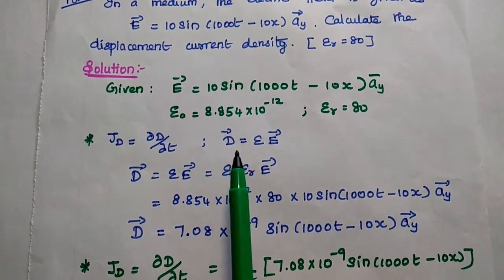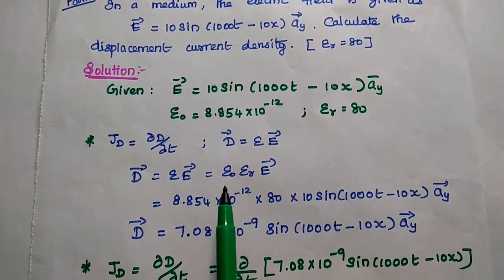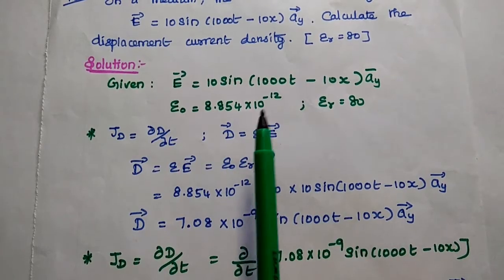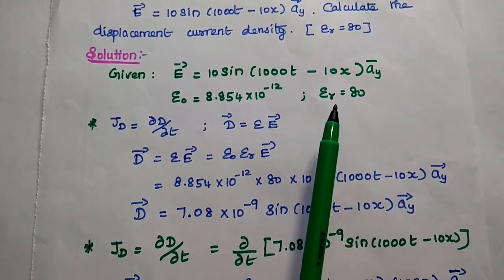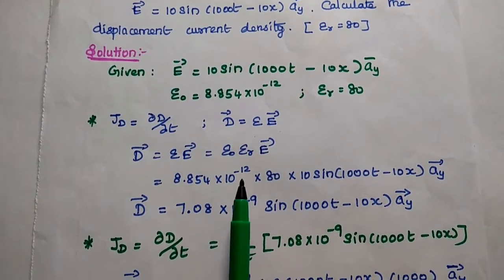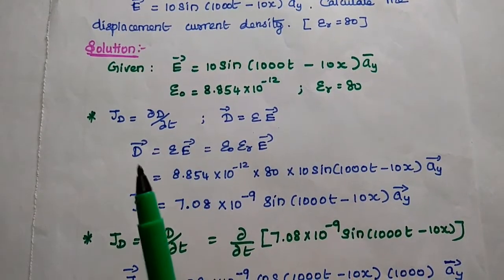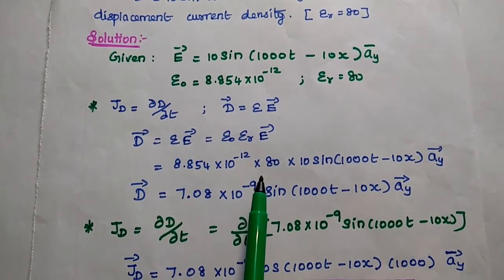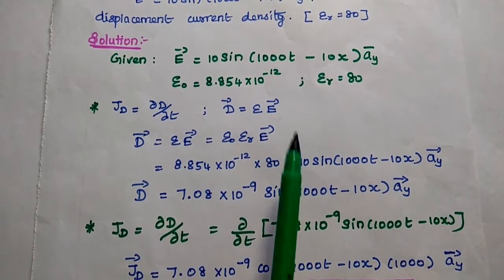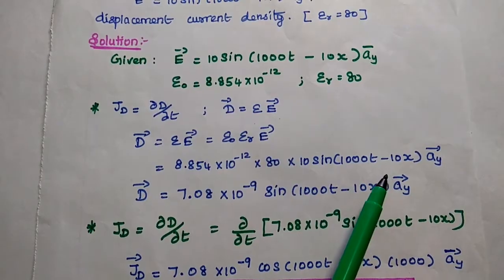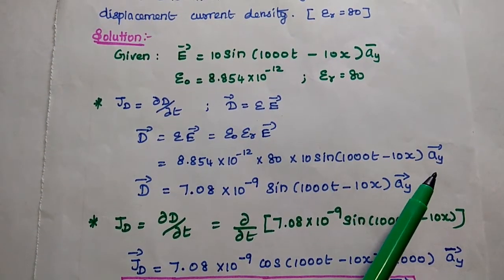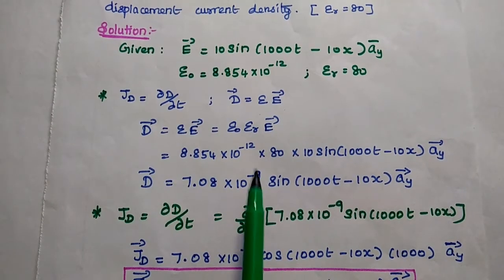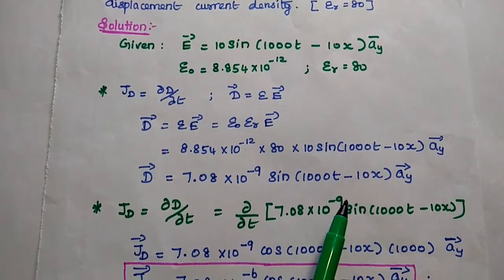The electric flux density D = epsilon times E vector, where epsilon = epsilon_naught times epsilon_R. Epsilon_naught is the constant value 8.854 × 10⁻¹² and epsilon_R is 80. Substituting all values, we get D = 8.854 × 10⁻¹² × 80 × 10 sin(1000T − 10X) aY, which simplifies to D = 7.08 × 10⁻⁹ sin(1000T − 10X) aY.